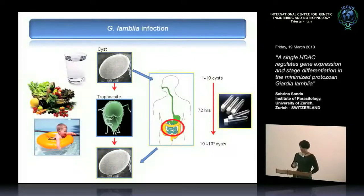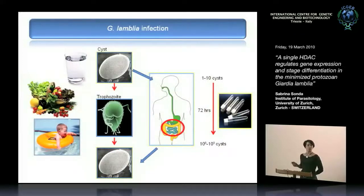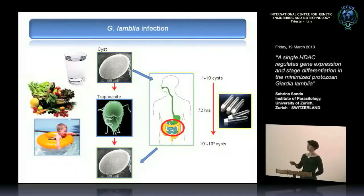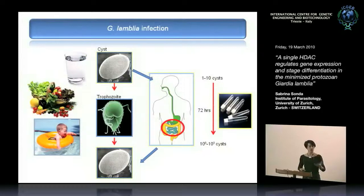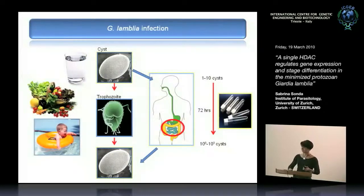An important aspect is that this entire process can be mimicked in vitro, which makes this parasite a very useful model for other parasites that also undergo cyst formation but where these stages cannot be replicated in vitro. So studying Giardia is important not only for its own sake, but also for understanding the biology of other parasitic organisms.